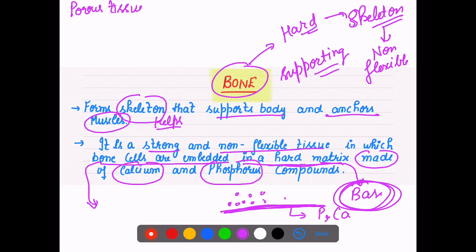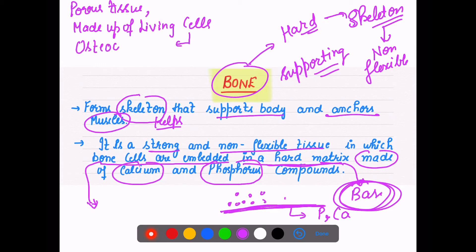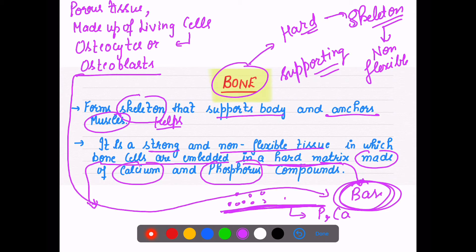The cells of bones are known as osteocytes or osteoblasts. The matrix on which these cells are present is made up of calcium and phosphorus.